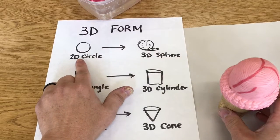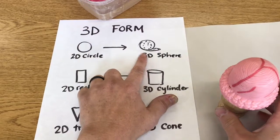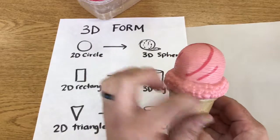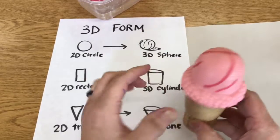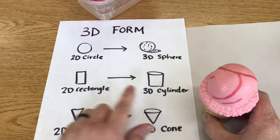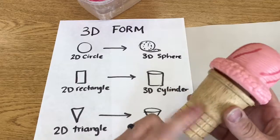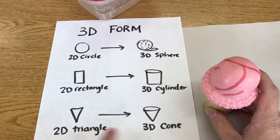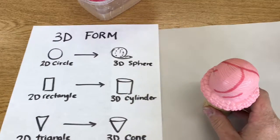So think of a two-dimensional circle. On a form, we call it three-dimensional, a sphere. This is like a sphere with that ice cream part at the bottom. Or actually it's more like a half circle. We think of a rectangle. When you make it 3D, it turns into a cylinder. This is a cylinder. It can stand up on its own. A triangle then goes into a cone.